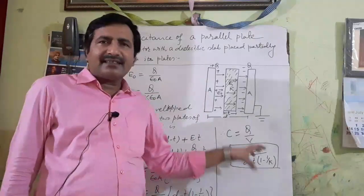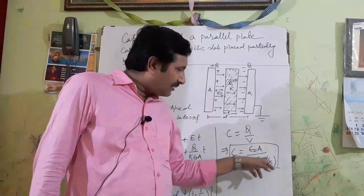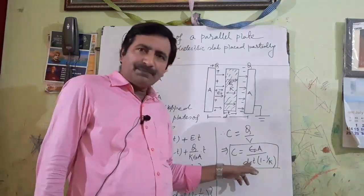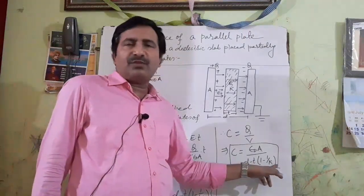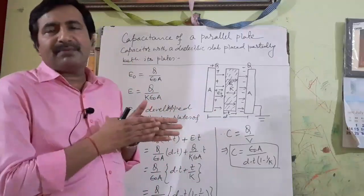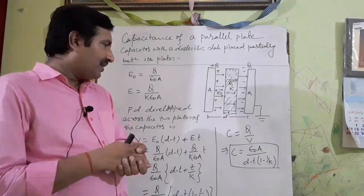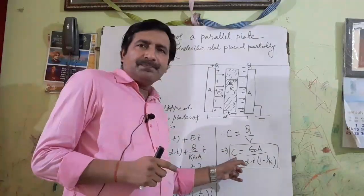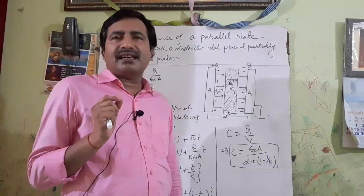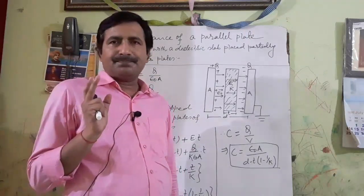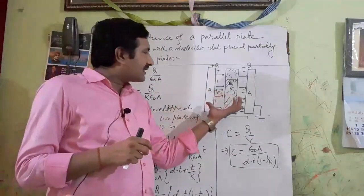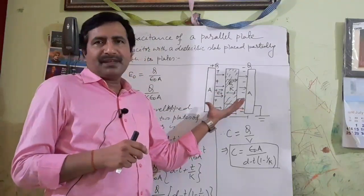You can analyze this expression. The denominator is D − T(1 − 1/K). Whenever there was free space between the two plates, the denominator was only D. Now the denominator has been reduced while the numerator ε₀A remains the same. So the value of C is increased when a dielectric slab is inserted between the two plates of the capacitor.